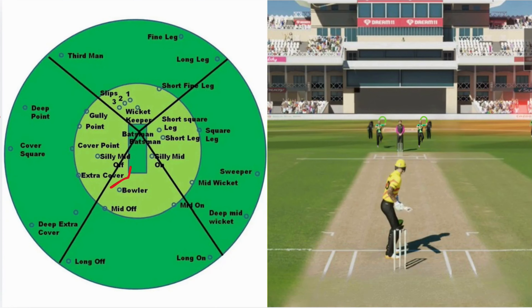Let's say Sandeep Lamichhane comes a little bit wider in his angle — now we can see this angle differently. When he is coming to the point where he is going to release the ball, the batter has reference points: the umpire, the stumps, and the crease line. You can see these reference points clearly.